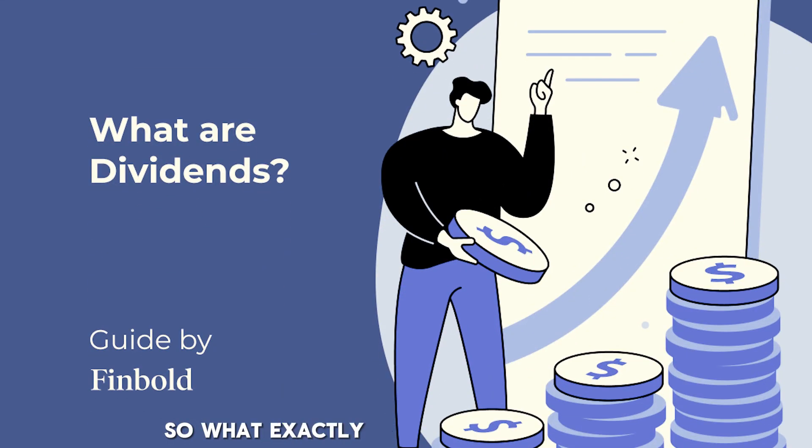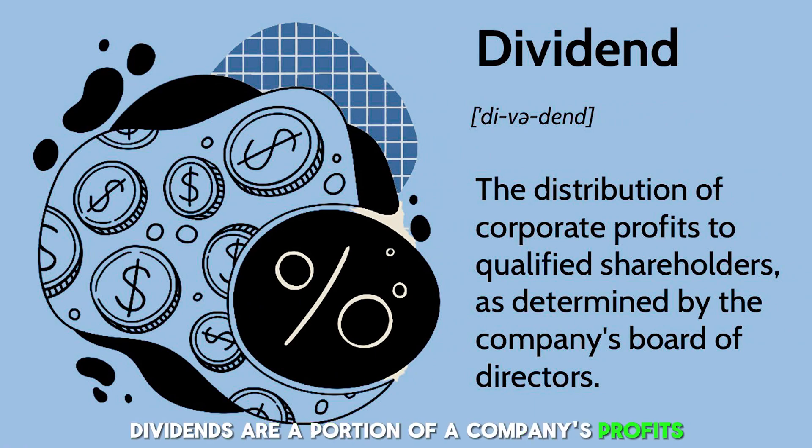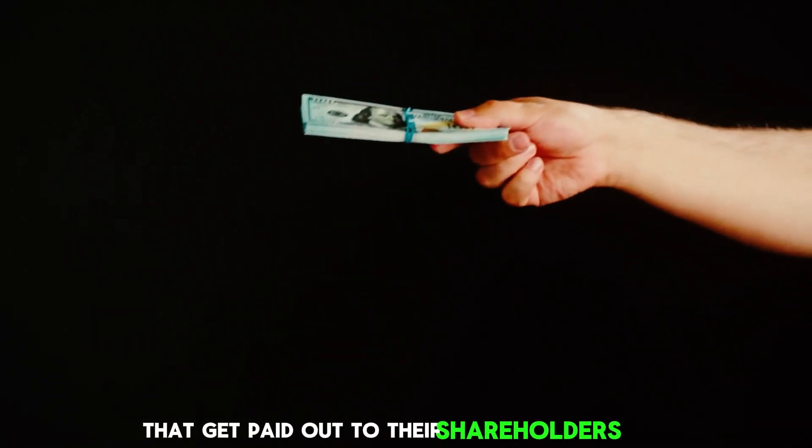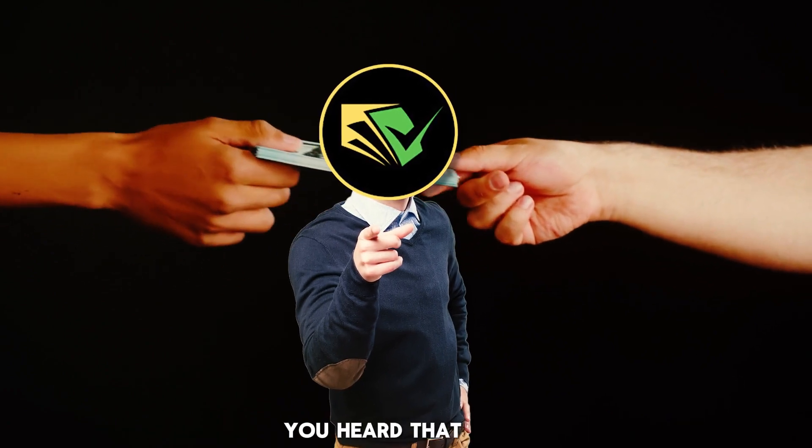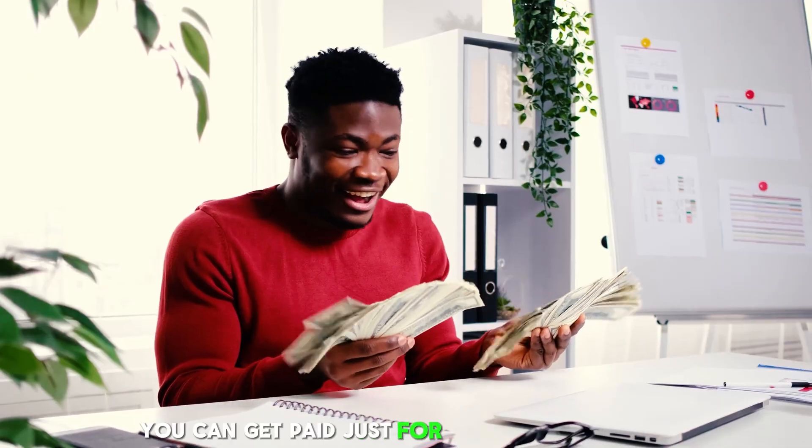So what exactly are dividends? Simply put, dividends are a portion of a company's profits that get paid out to their shareholders. Yeah, you heard that right. By owning shares of a company, you can get paid just for being a part owner.